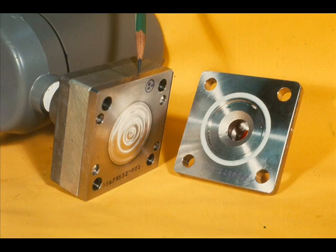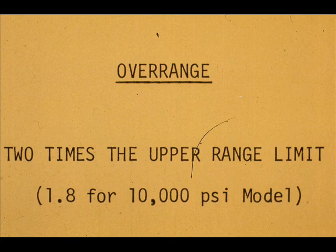The pressure range is determined by the selected body assembly. The over range limit is twice the upper range limit for a given body assembly.